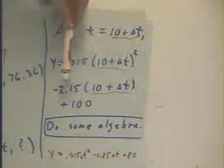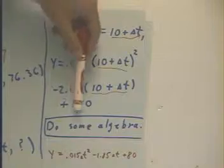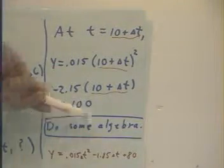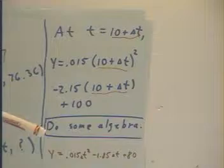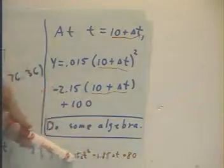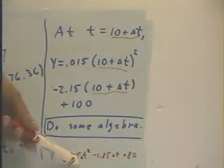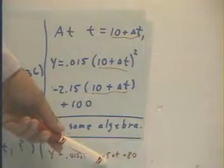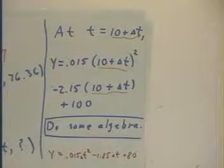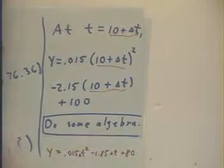Distribute through here and make sure that we keep our signs correct and add the 100 and then simplify. Do just a little bit of algebra and simplify the expression. We obtain y equals 0.015 delta t squared minus 1.85 delta t plus 80.